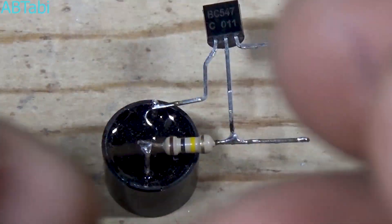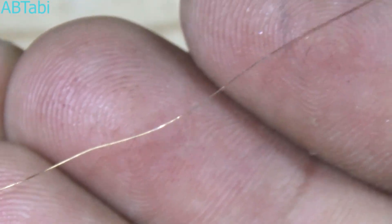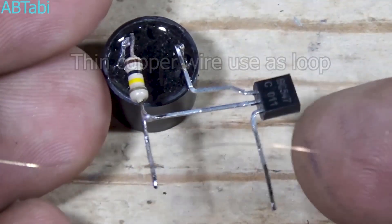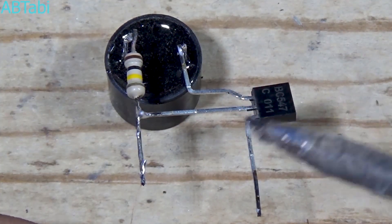Now take a very thin wire, solder one end of this wire to the base pin of the transistor, and connect the other end of the wire to the emitter pin of the transistor. Our circuit is now complete and ready for testing.